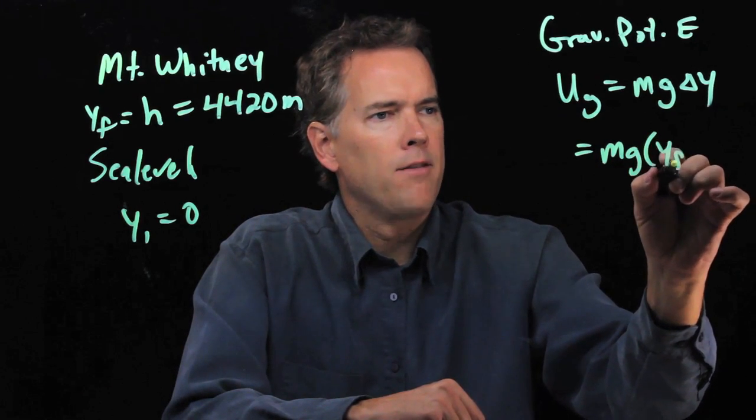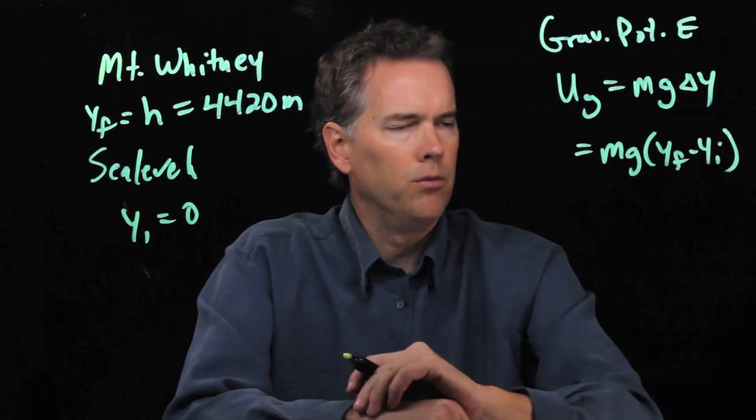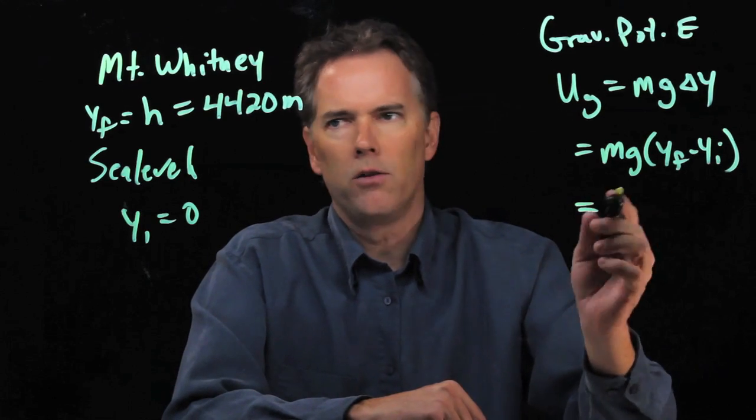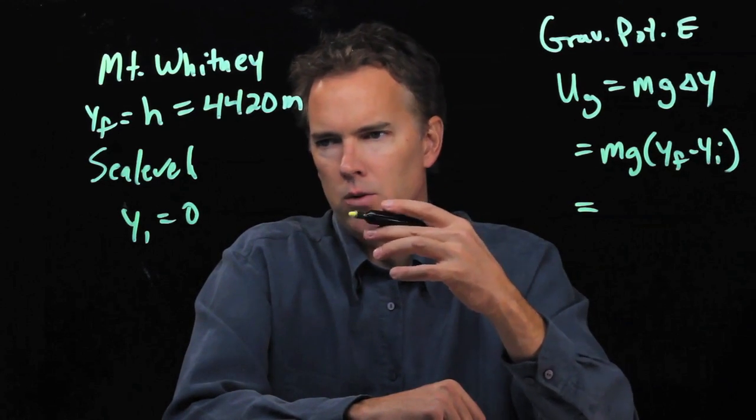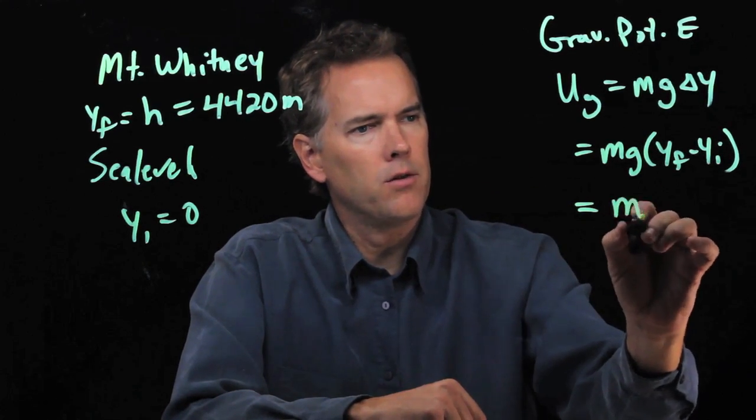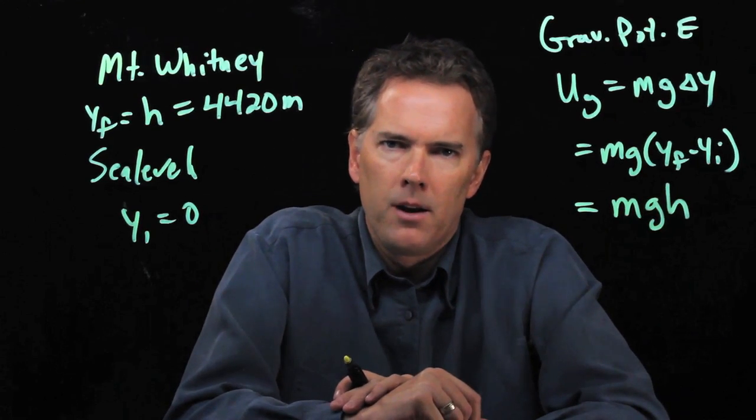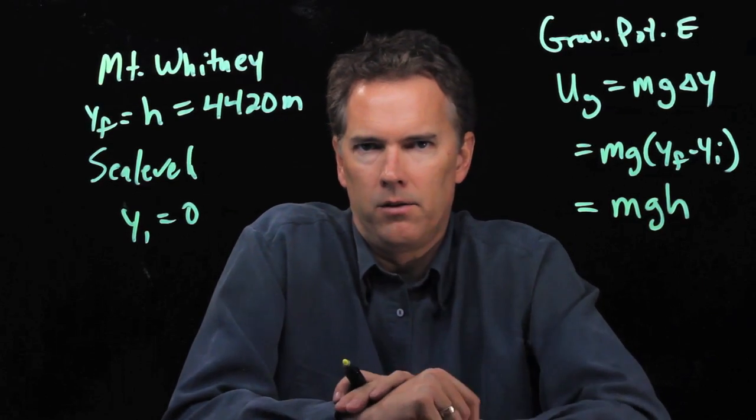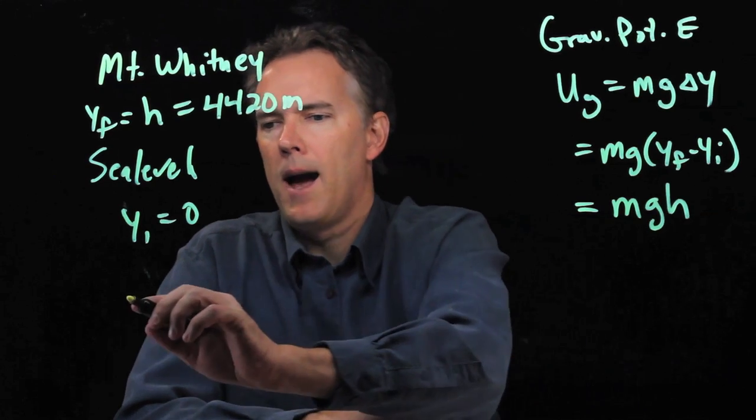Okay, but we know what delta y is. That's just y final minus y initial. And in this case, y final is h, y initial is zero, so this just becomes mgh. Now if you are hiking this elevation, we need to know your mass.